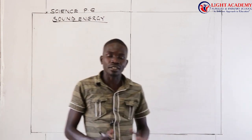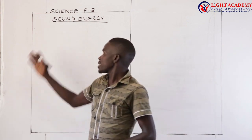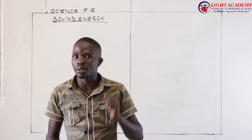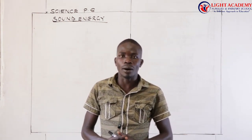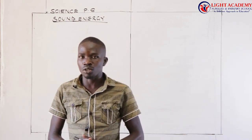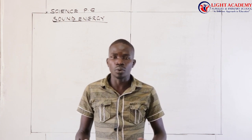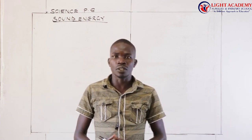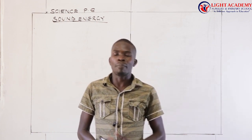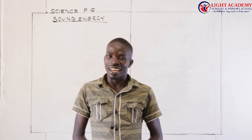The topic is sound energy. Remember, when I was here in the previous lesson, we looked at sound and we said that sound is the form of energy that stimulates the sense of hearing. We also talked about how sound is produced, and we said sound is produced by means of vibration. We said that regular vibration produces the type of sound which we call music, while irregular vibration produces noise because the interval is not uniform.